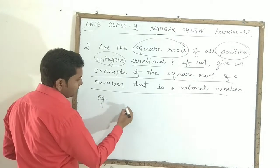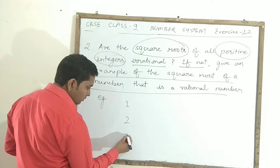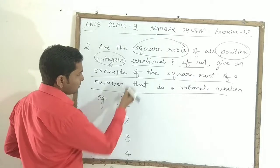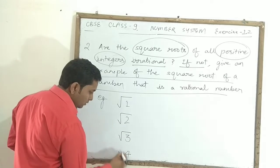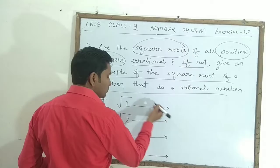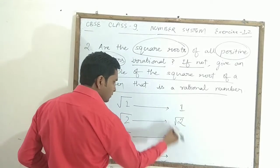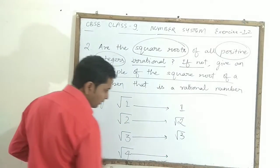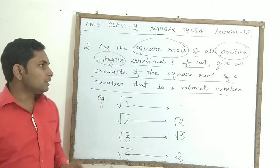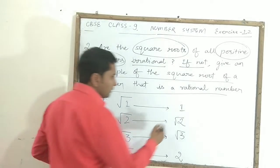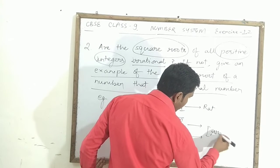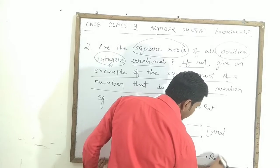Take positive integers 1, 2, 3, and 4, and find their square roots. Square root of 1 is 1 (rational). Square root of 2 is irrational. Square root of 3 is irrational. Square root of 4 is 2 (rational). So among these four, two results are rational and two are irrational.